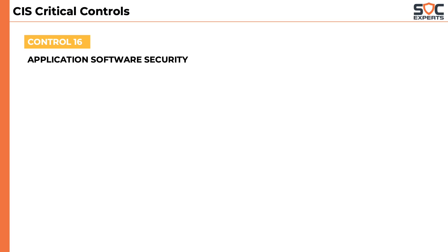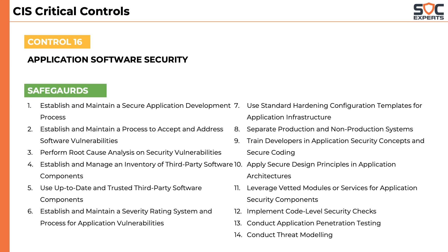The sixteenth control talks about application security. This applies to companies that are either developing products for customers or companies developing homegrown applications. There are 14 safeguards defined in this control, which mainly focus on preventing attacks at the application layer by implementing security practices into the software development lifecycle.